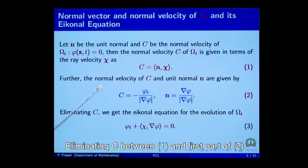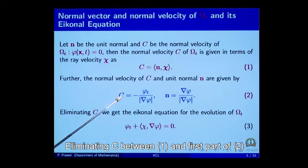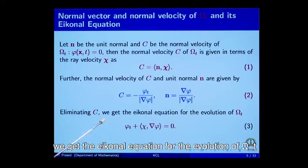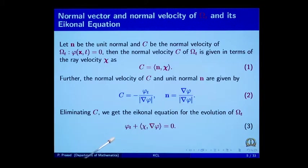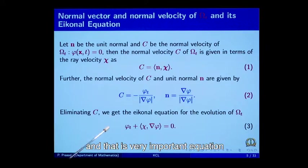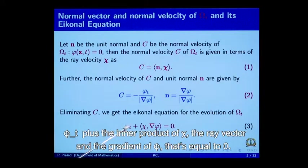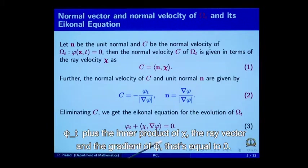Eliminating c between equation 1 and the first part of equation 2, we get the iconal equation for the evolution of omega t, which is a very important equation: phi_t plus the inner product of chi, the ray vector, and the gradient of phi equals zero.